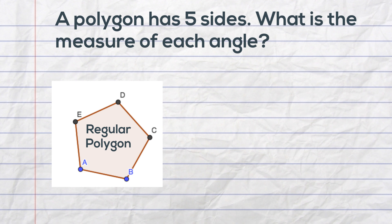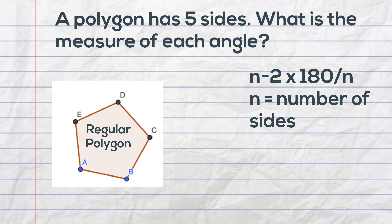Okay, how about this problem? A polygon has 5 sides. What is the measure of each angle? Well, you can use the same formula n minus 2 times 180 and then just divide it by n, and n is the number of sides.